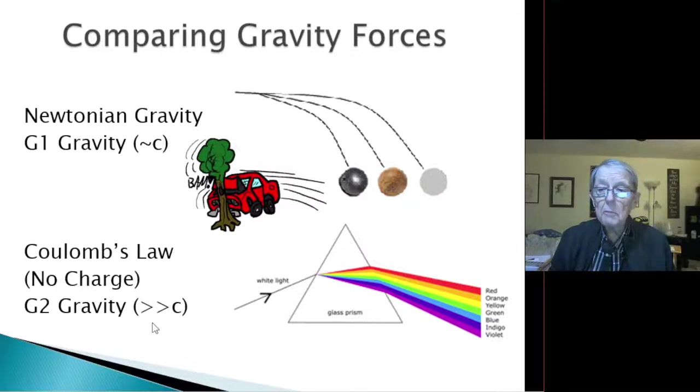So this gravity, this G2 gravity, must be much, much faster than light, just like Newtonian gravity moving at speed C, is faster than the lead, wood, and cotton balls. G2 is much, much faster than light.